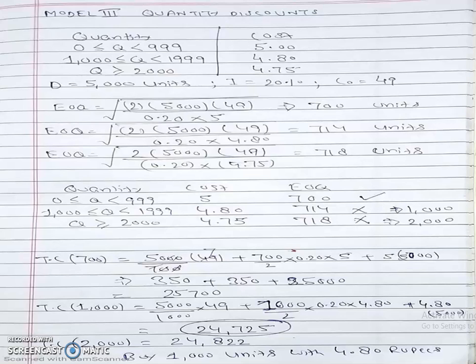Here I take two columns where first I define the quantity and second I define the cost. For example, if the ordered quantity lies between 0 to 999, the cost would be 5 rupees, meaning per unit cost of material is 5.